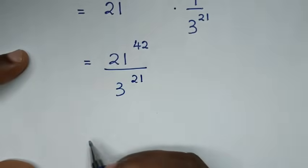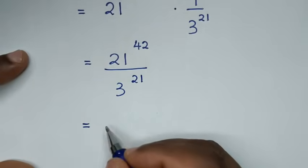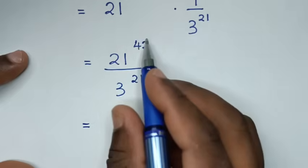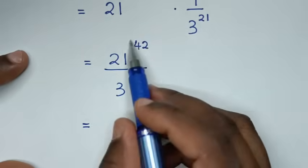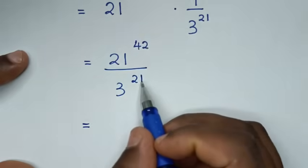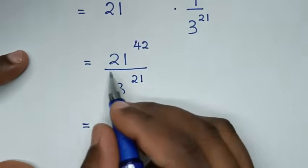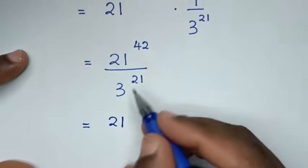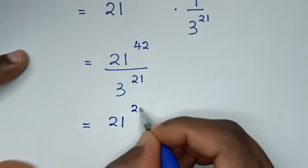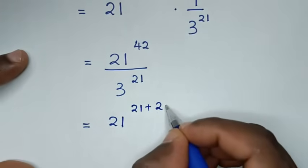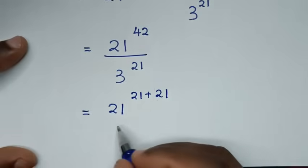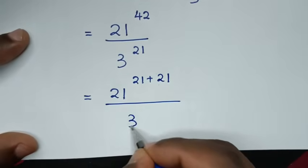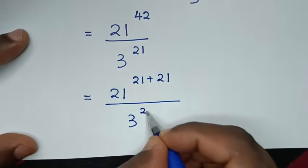Then in the next step, it will be equal to: 21 power of 42 — here 42 as an exponent on base 21 — it will be equal to 21 power of 21, squared, over 3 power of 21.